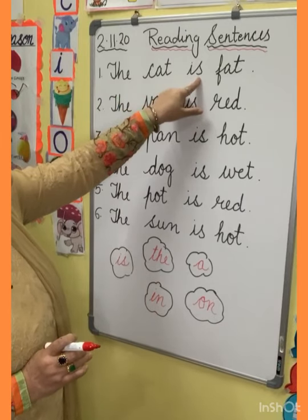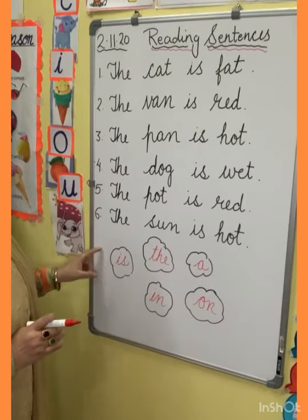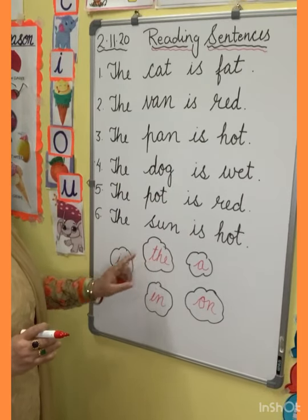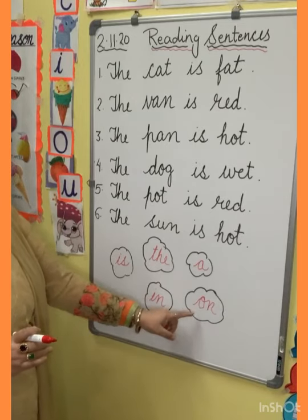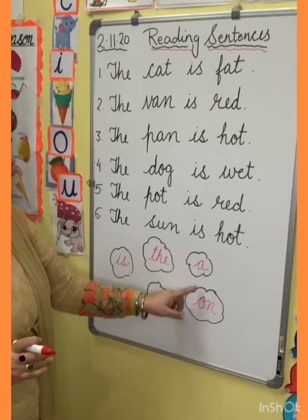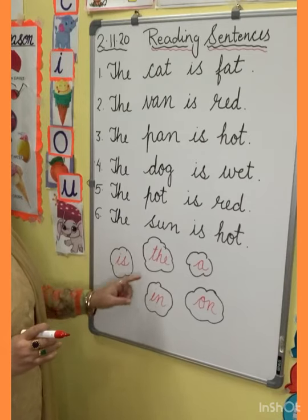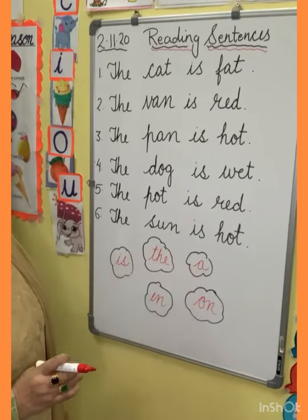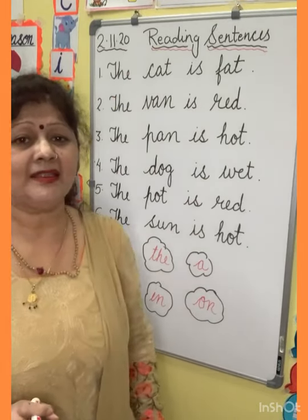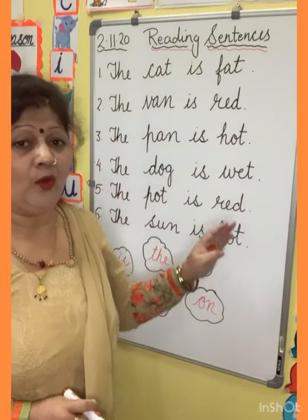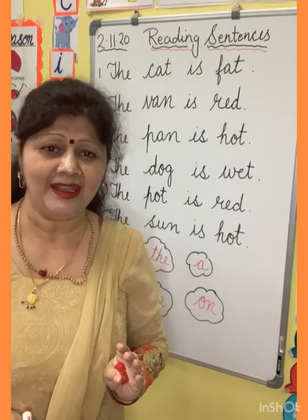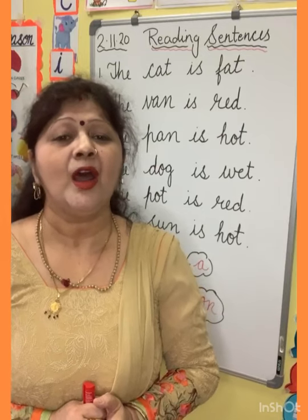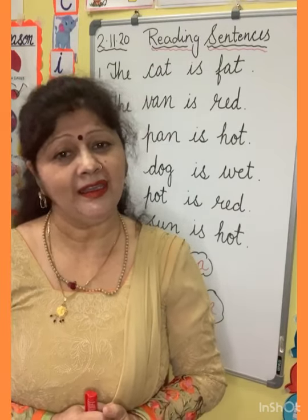Now let's review: I sound — E, S sound — S, 'is'. Ma'am has written some words. 'The' — T-H-E, the. 'I' sound E, 'O' sound O, 'on', 'a'. So today we have started simple sentence reading. You also have to read these sentences with sounds. Today we did A to Z cursive writing and started simple sentence reading. Slowly you will find it easier to read all the sentences.